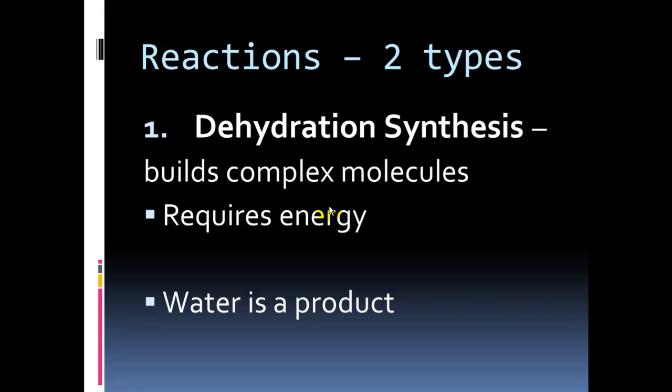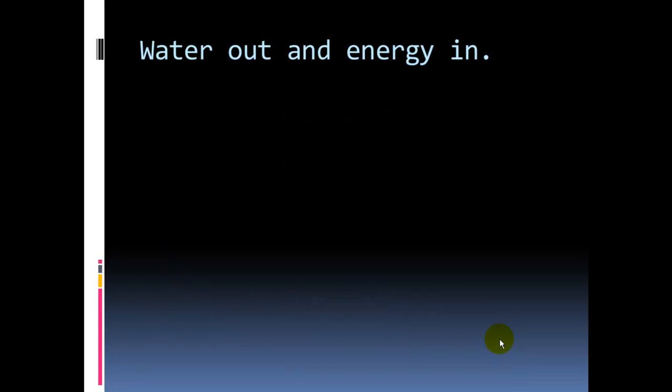So, dehydration synthesis is when we take, if we're going back to the necklace, we take the individual beads, and we link them together. Obviously, in chemistry speak, we're making bonds when we link monomers together. We are building polymers. It's going to require an input of energy. So, we're really storing energy in these bonds that we can then utilize later when we need it. And water is going to be produced, meaning when we see it as a chemical reaction, it's going to be on the right-hand side of the reaction. Water is a product.